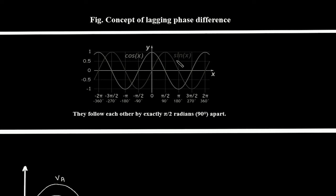Here we can see a sine wave and a cosine wave. They follow each other by exactly pi/2 radians, or 90 degrees apart. The sine wave starts from the zero point, while the cosine wave starts from a different point, so they are exactly 90 degrees apart.